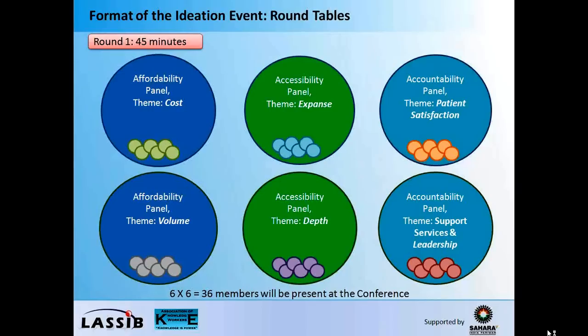You see in the middle of your screen the accessibility panel, which will talk about expense, and a similar panel will talk about depth. And third, on the right-hand side of your screen, the accountability panel — one table will talk about patient satisfaction, the other one will talk about support services and leadership.